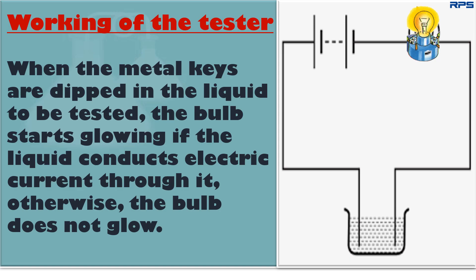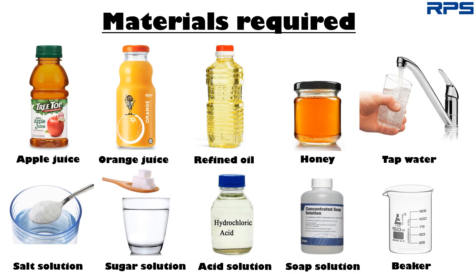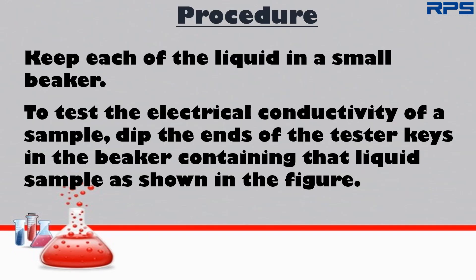Let's perform another activity to test the electrical conductivity of some liquids. In order to perform the experiment, you will require samples of apple juice, orange juice, refined oil, honey, tap water, water mixed with common salt (that is, salt solution), sugar solution, acid solution, soap solution, a small beaker, and a conductivity tester. Keep each of the liquids in a small beaker. To test the electrical conductivity of a sample, dip the ends of the tester keys in the beaker containing that liquid sample as shown in the figure.